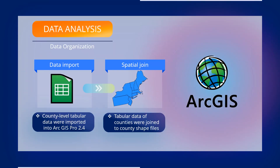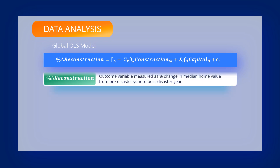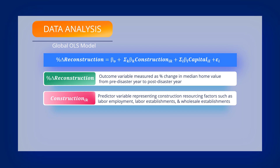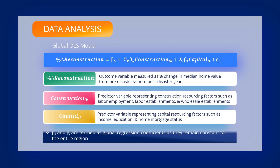We used a Geographic Information System or GIS software for data organization and analysis. County-level data was imported to ArcGIS Pro software and linked to the polygon shapefiles of each county. The global OLS model was specified using the equation shown on screen, where reconstruction indicates the outcome variable measured as percent change in median home value from pre-disaster year to post-disaster year. Construction represents a set of predictor variables indicating labor and materials. Capital represents a set of predictor variables indicating socioeconomic indicators. The regression coefficients of the OLS remain constant for the entire study region, and hence are called global regression coefficients.